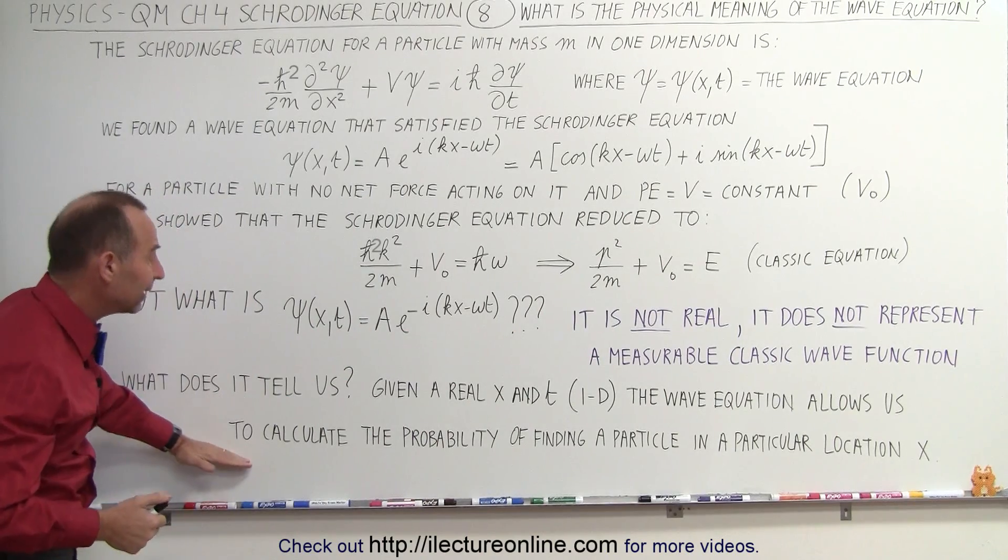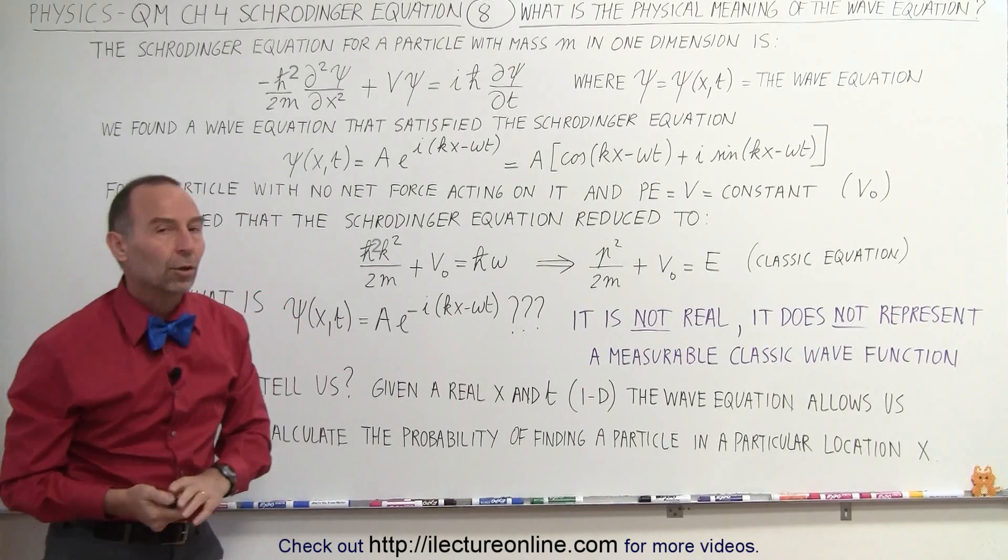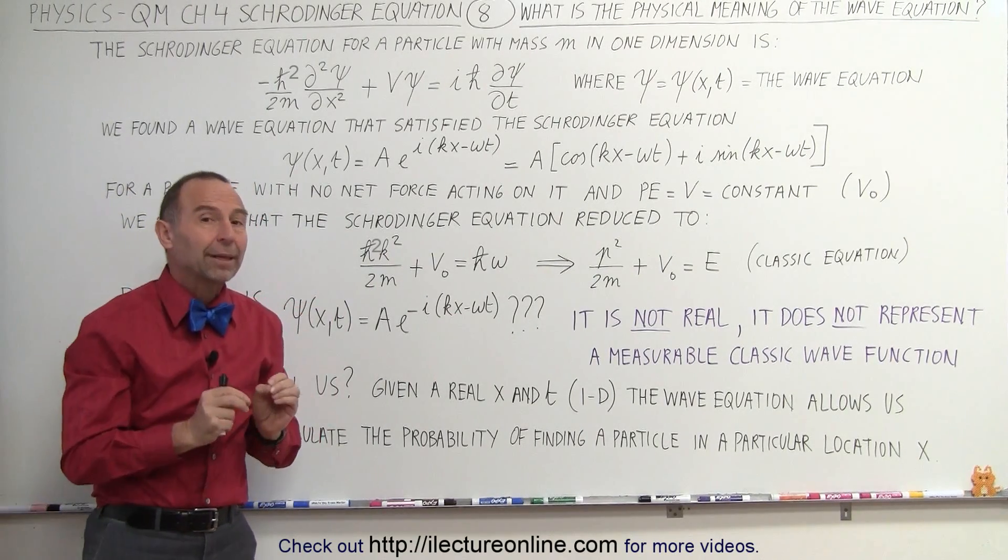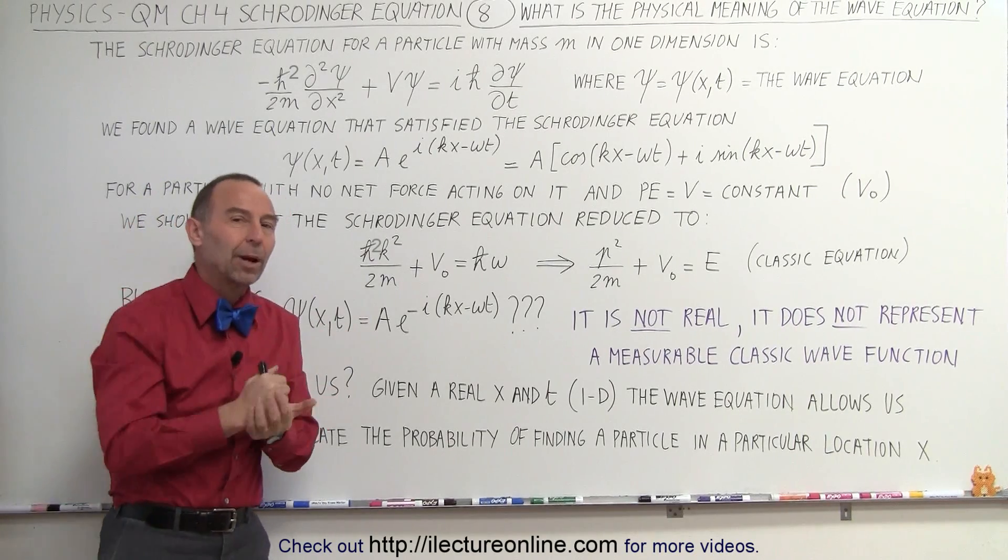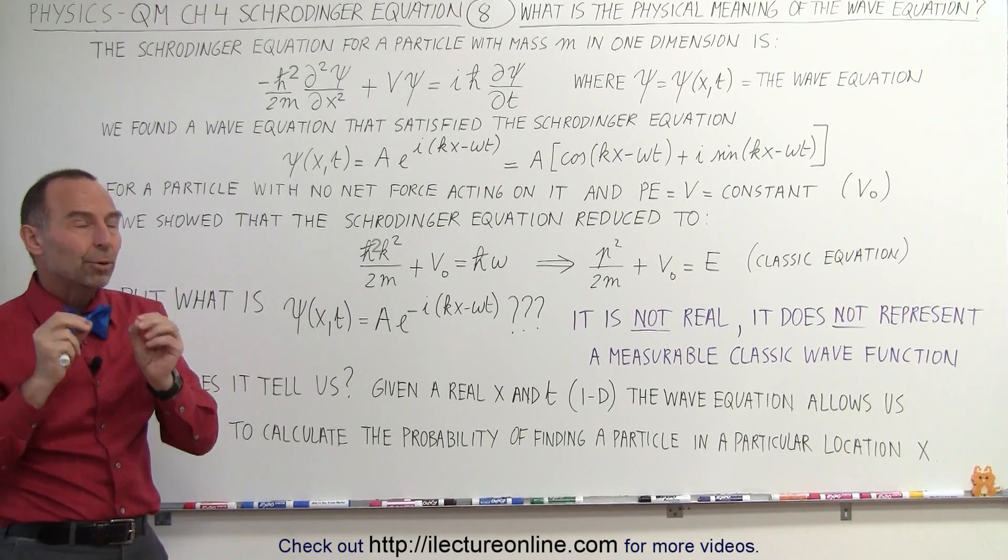It allows us to calculate the probability of finding a particle in a particular location. The equation doesn't represent the probability. It just allows us, a vehicle, to calculate the probability. We'll show you how to do that later, but this is a really important aspect.